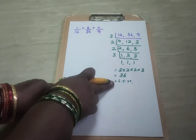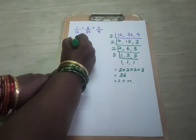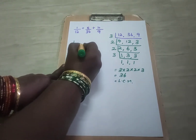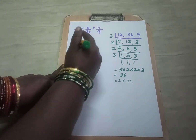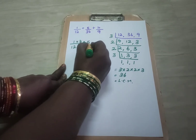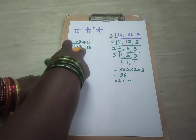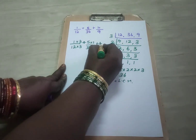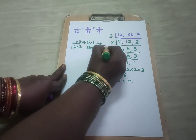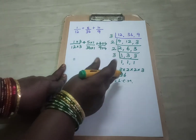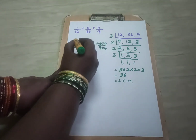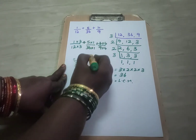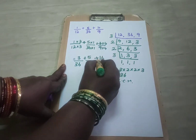First we have found the LCM. After that, write the fraction 1 by 12. How many times does 36 go in 12? It is 3 times. So the same 3 should be multiplied with the numerator. Plus next fraction 5 by 36 — 36 goes in 36 table 1 time. The same 1 should be multiplied with the numerator. Plus last fraction 4 by 9 — 36 goes in 9 table 4 times. The same 4 should be multiplied with the numerator. After multiplying: 1 three is 3 by 12 threes are 36, plus 5 ones are 5 by 36, plus 4 fours are 16 by 9 fours are 36.